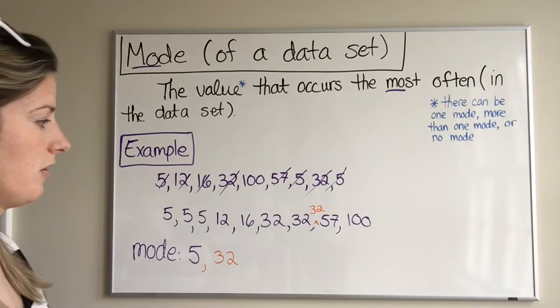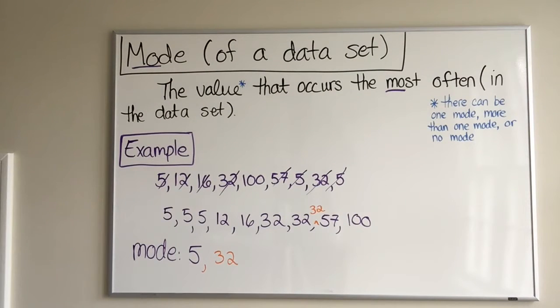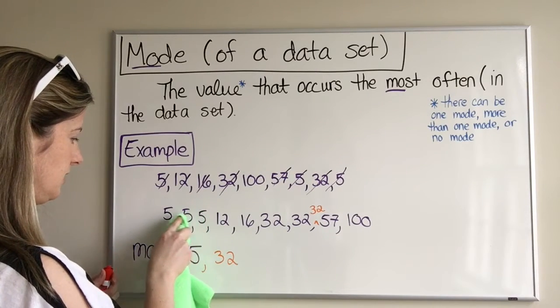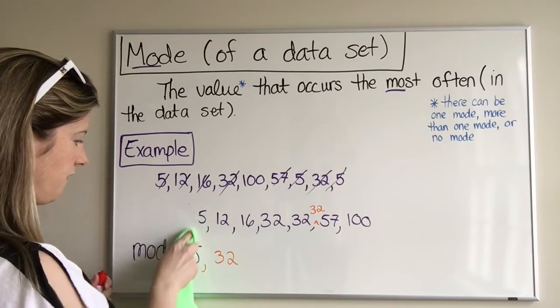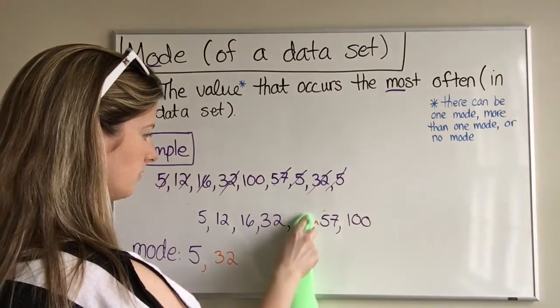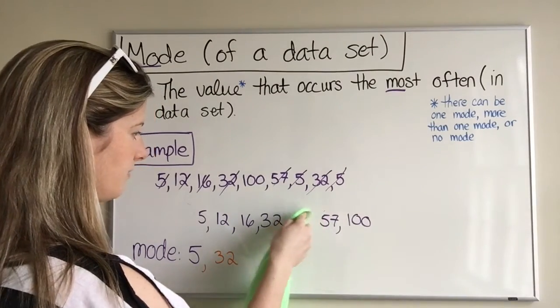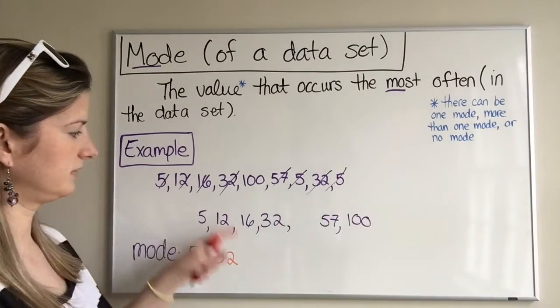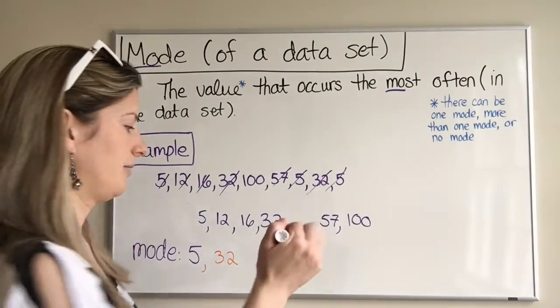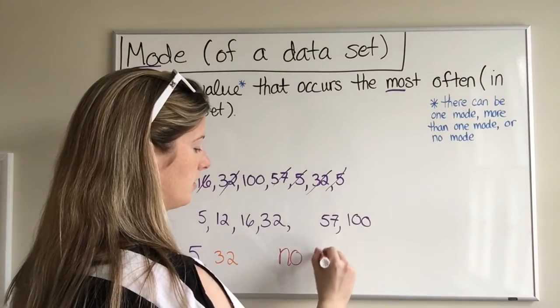And then the other thing that could happen - what if I erased this 5, this 5, this 32, and this 32, and instead my data set was 5, 12, 16, 32, 57, 100? Well, in this case, there would be no mode.